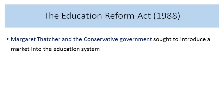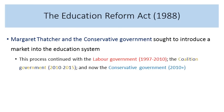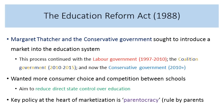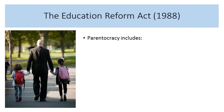The next big milestone was in 1988 with the Education Reform Act. Margaret Thatcher and the Conservative government sought to introduce a market into the education system. This process was continued by the Labour government from 1997 to 2010, the coalition government from 2010 to 2015, and the Conservative government from 2015 onwards. They wanted more consumer choice and competition between schools, and aimed to reduce direct state control over education. A key policy at the heart of marketisation was parentocracy — or rule by parents — giving power to parents to make decisions on their children's behalf.